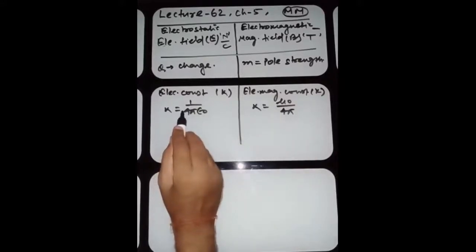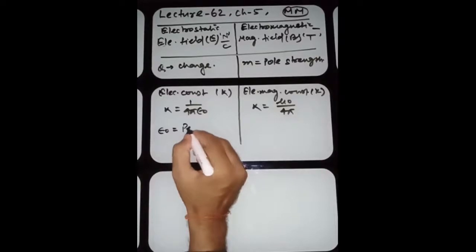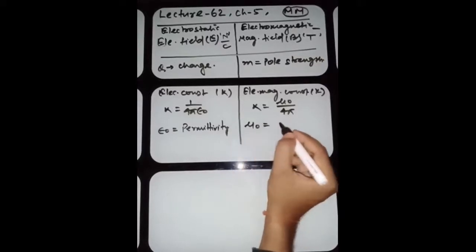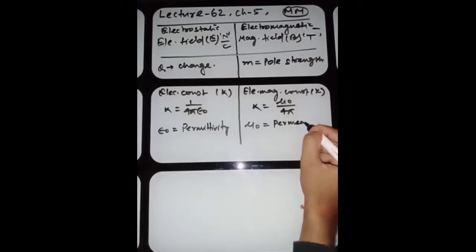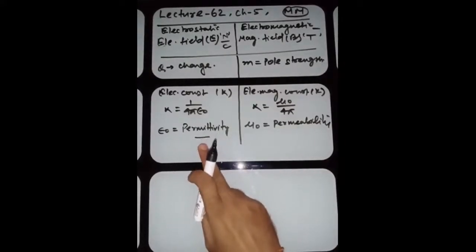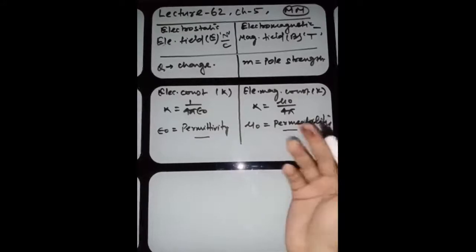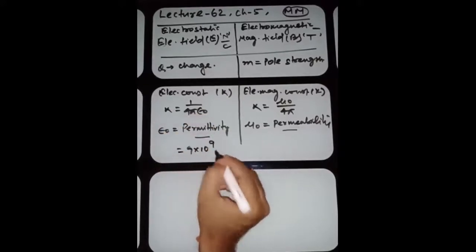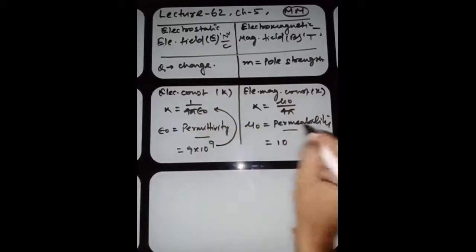In both equations, 4π is constant. Epsilon-naught is the absolute permittivity of the medium, and mu-naught is the absolute permeability of the medium. Epsilon-naught decides how many electric field lines cross through a medium, and mu-naught decides how many magnetic field lines cross through any medium.